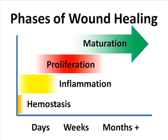Medical authorities often describe wound healing in terms of overlapping phases that occur in the days, weeks, and months following an injury. These phases are hemostasis, inflammation, proliferation, and maturation.